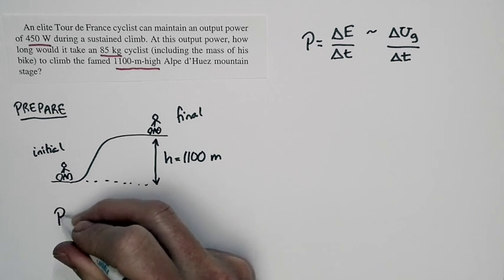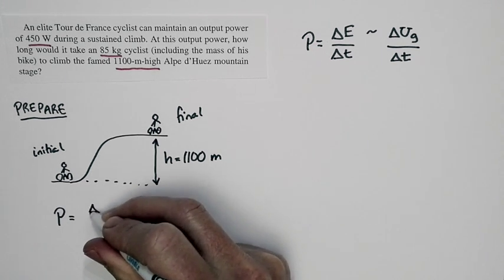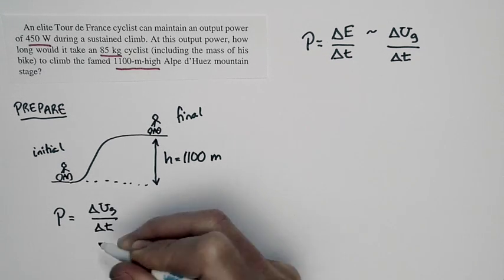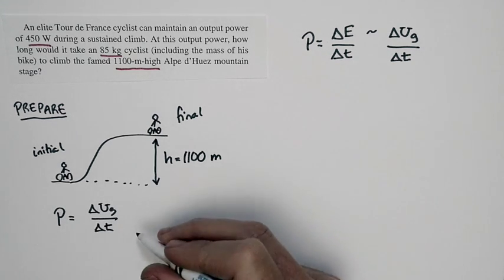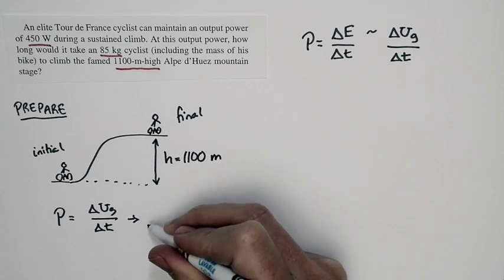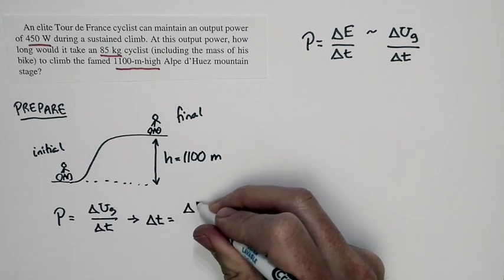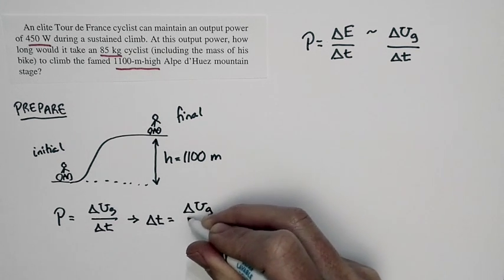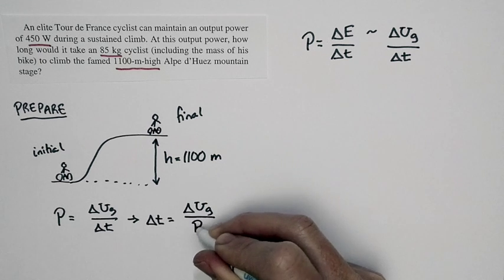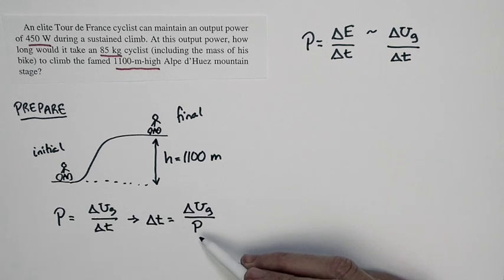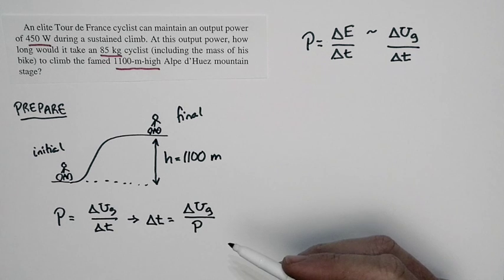And the power in this case, as we saw, is just equal to the change in gravitational potential energy divided by the time. We're given the power, we're trying to solve for the time. So we rearrange this expression to look like this: the time interval is just equal to delta UG divided by the power. And this makes sense because this is how many joules are necessary, this is how many joules per second the cyclist can provide. The net result is we're going to get a time in seconds.